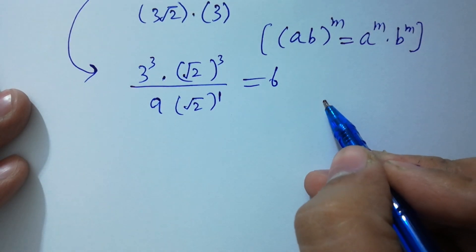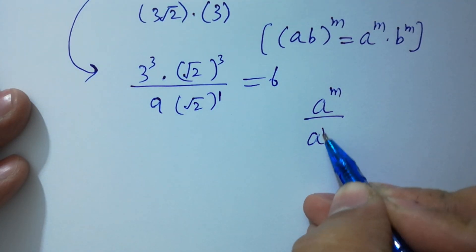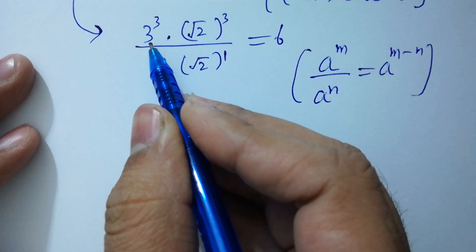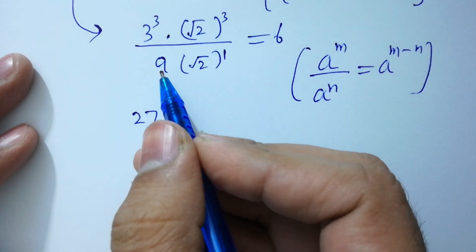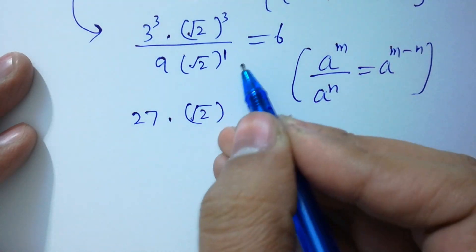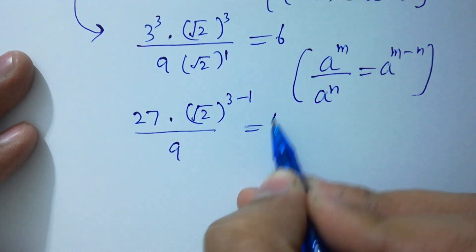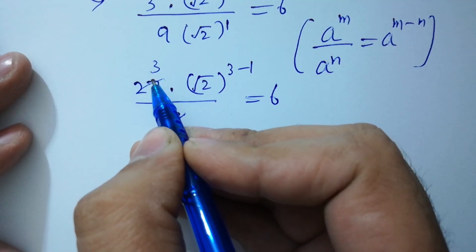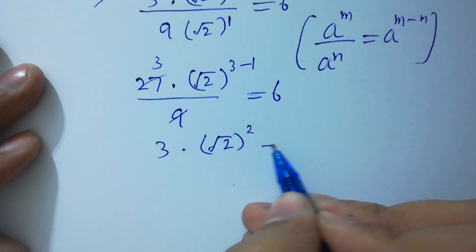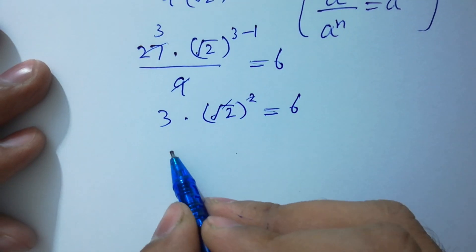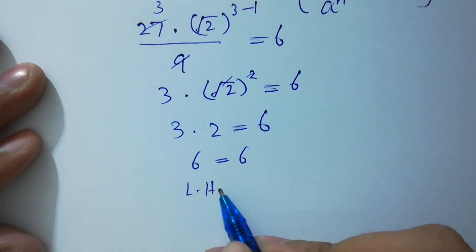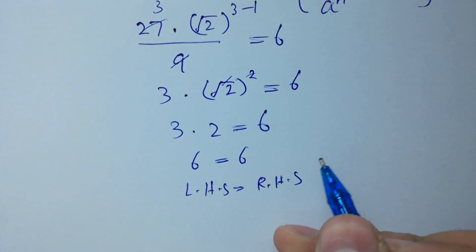Since a to the power m over a to the power n equals a to the power m minus n, 3 cubed is 27, times square root of 2 to the power 3 minus 1, over 9 equals 6. We have 3 times square root of 2 to the power 2 equals 6. The scale cancels from the square root, giving 3 times 2 equals 6, so 6 equals 6. Left hand side equals right hand side.